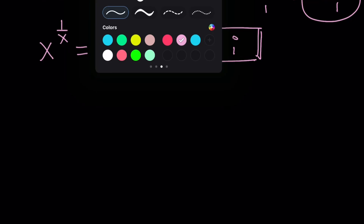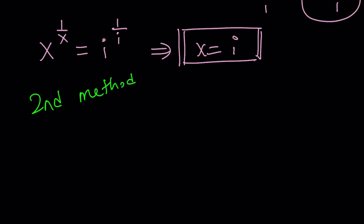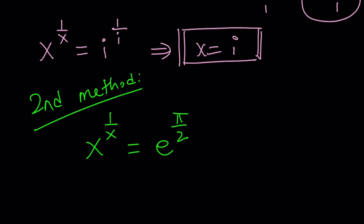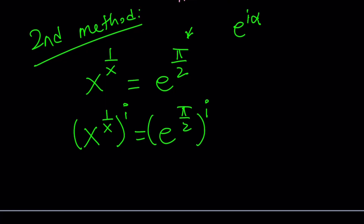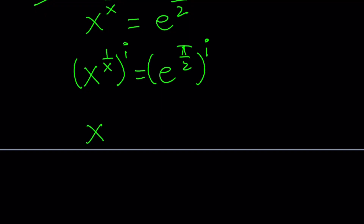Let's talk about the second method. It's going to use a similar argument, slightly different, but will arrive at the same result. Again, this is one of the solutions — I'm not saying these are all the solutions, but I also won't say there are more. I'll leave it as an exercise for the reader. So what I'm going to do: since I know the presence of something like e to the power i alpha is helpful, I'm missing the i here, so why not bring it in? Let's raise both sides to the power i. Then we get x to the power i over x on the left-hand side, and e to the power i times pi over 2 on the right.